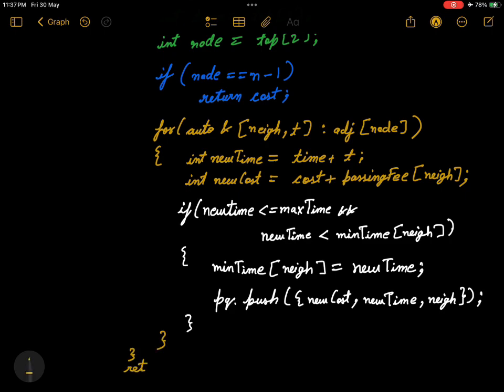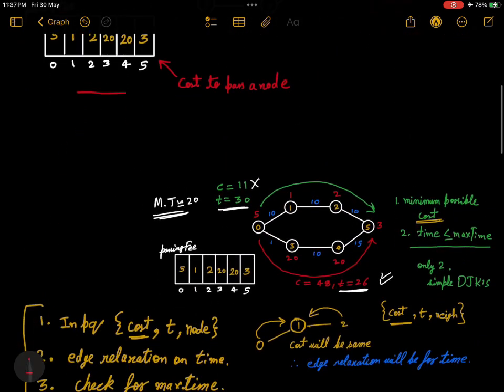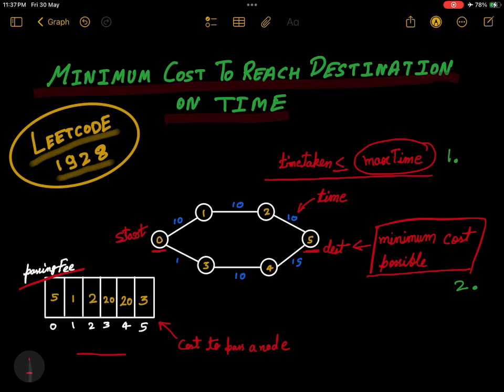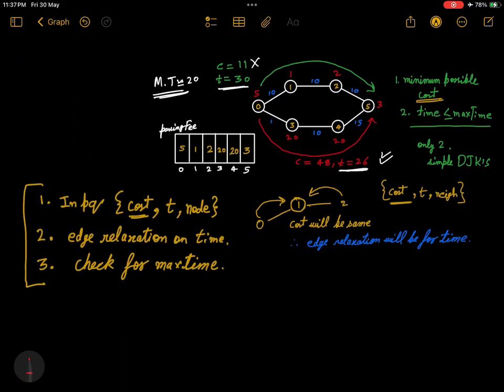Just a slight modification in Dijkstra. And at the end, if we don't find our node, we will return minus one. Let's revise this question: we have to go from start to destination in minimum cost possible, and time taken should be less than the max time given.